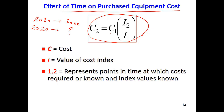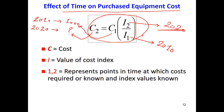In this equation: C1 is the price of the equipment in 2010, C2 is the price of the equipment in 2020 that we want to find, I1 is the index in 2010, and I2 is the index in 2020. The price index values are found from tables and resources that provide this type of index. C represents cost, I represents the index, and the subscripts 1 and 2 represent the years.